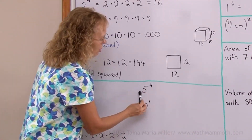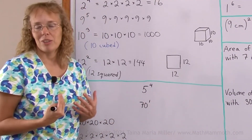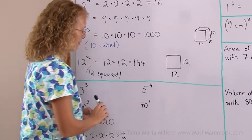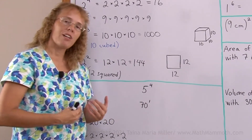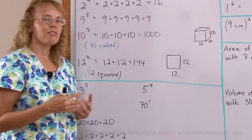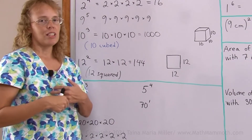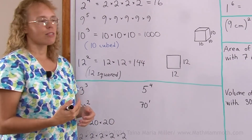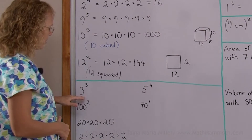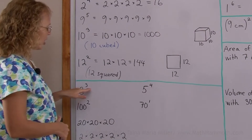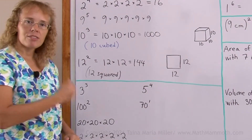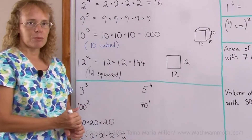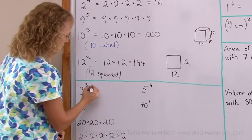This whole expression here is called a power. It's a certain power of five, and of course there are other powers of five: five to the third power, five to the fifth power — all of those would be powers of five. Here, three cubed means three times three times three. That's nine times three, so it is twenty-seven.